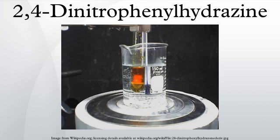2,4-Dinitrophenylhydrazine is the chemical compound C6H3(NO2)2NHNH2. Dinitrophenylhydrazine is relatively sensitive to shock and friction; it is a shock explosive, so care must be taken with its use. It is a red to orange solid, usually supplied wet to reduce its explosive hazard.